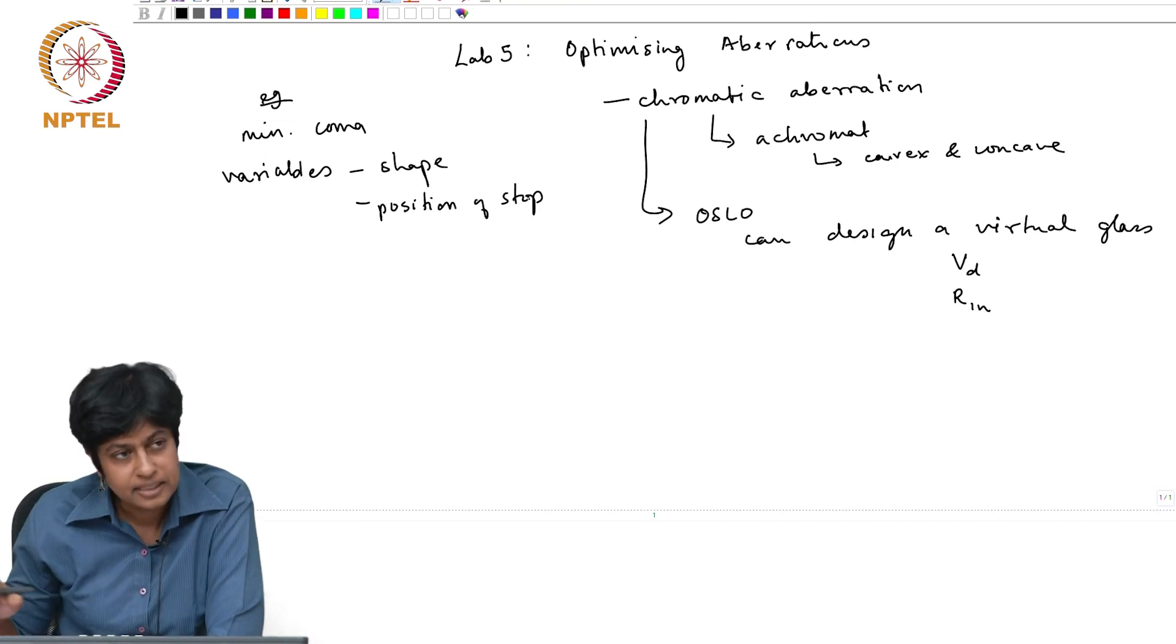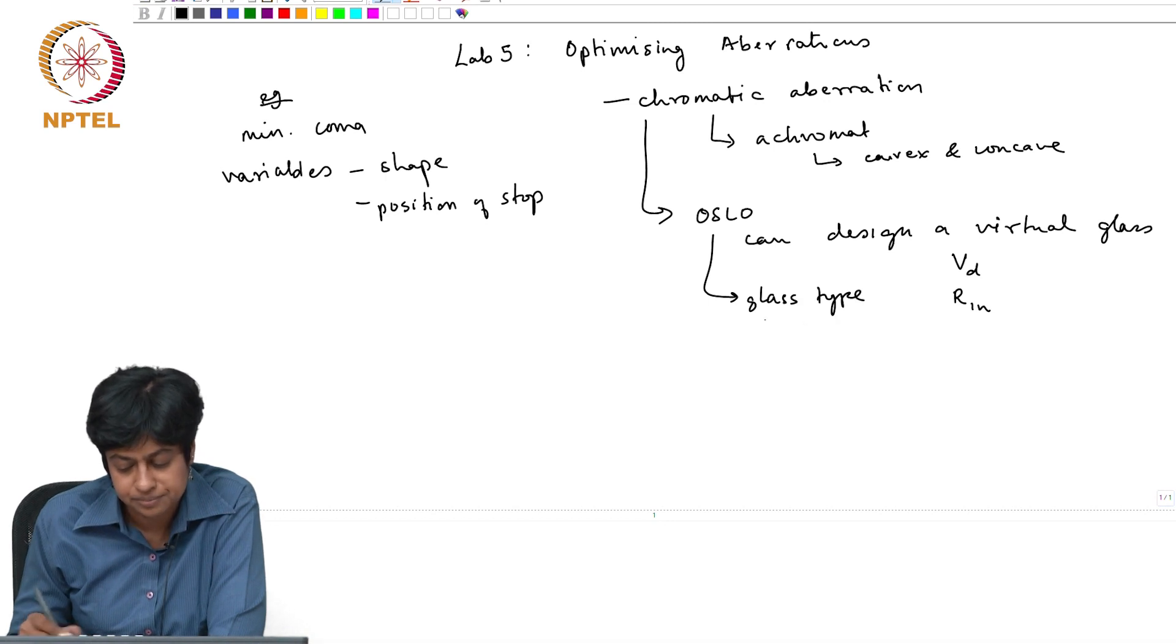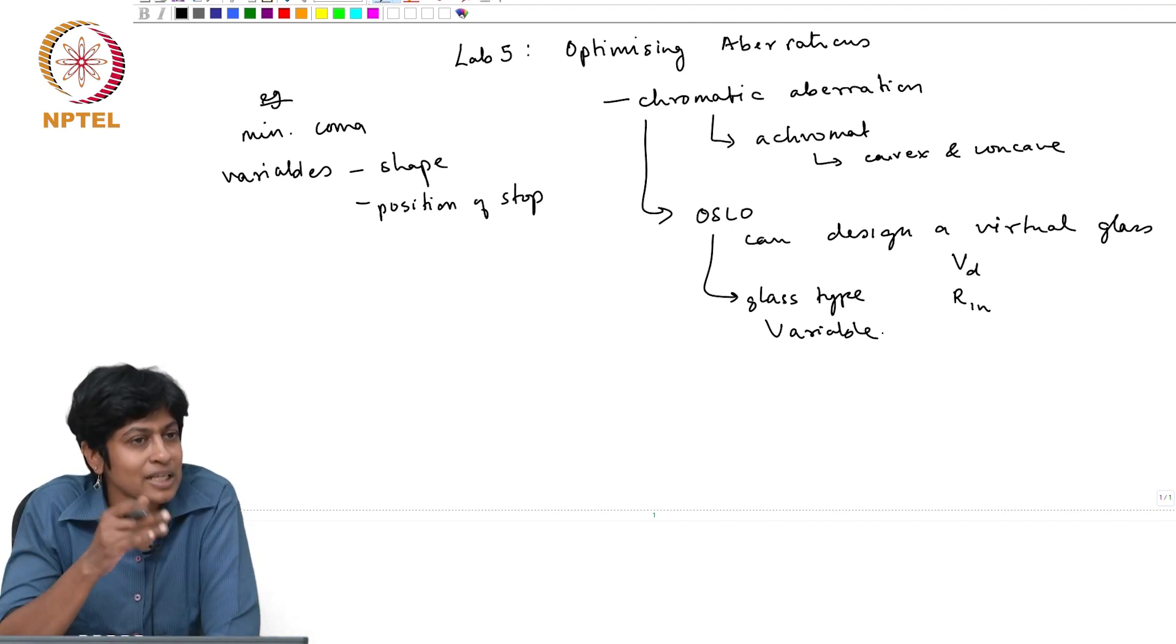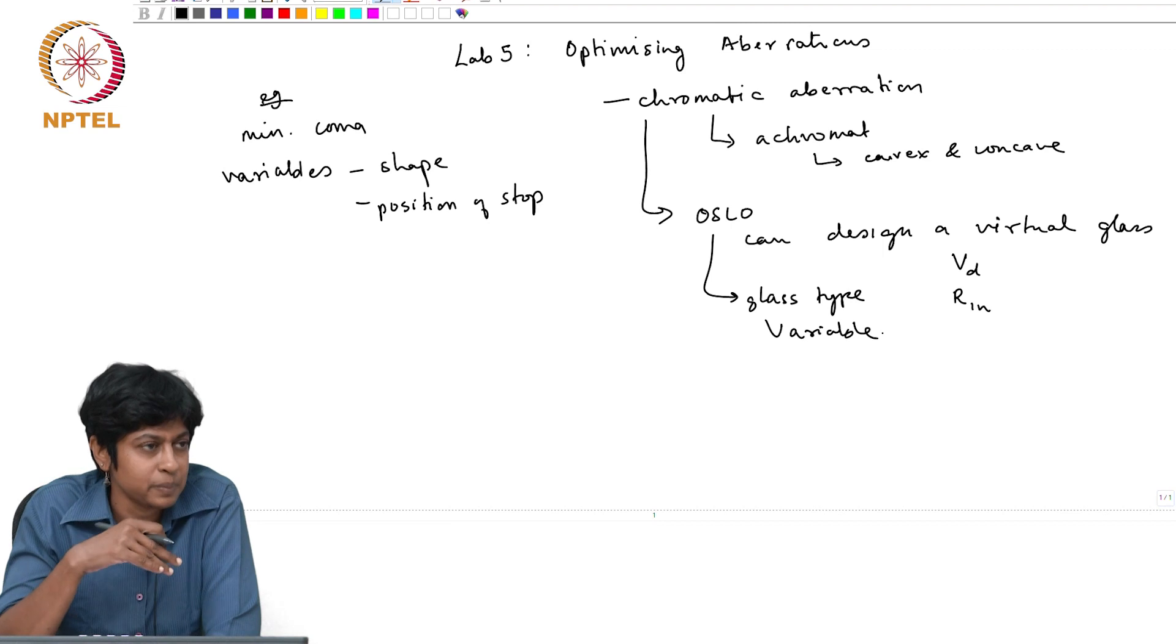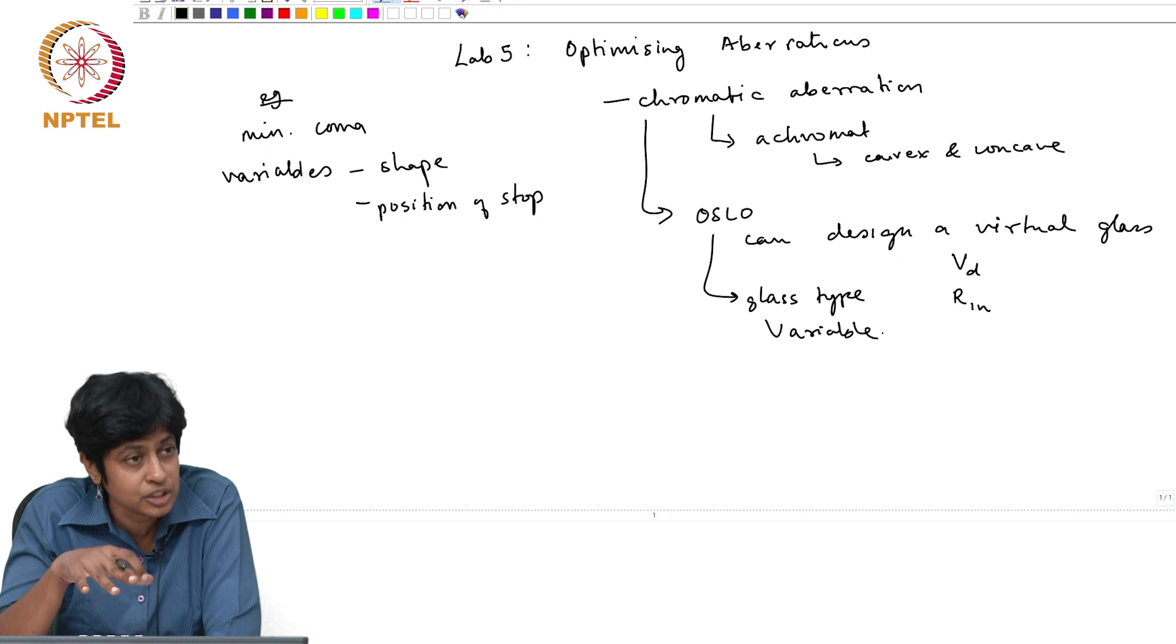Now, we are saying can I design a virtual glass. So actually my glass type is going to be a variable. The set of instructions will tell you how to set a glass type as a variable, how to run the optimization, and once you have optimized and found out which is the best glass that would give you the minimum chromatic aberration for your set of convex and concave lenses.